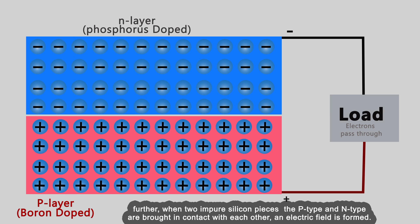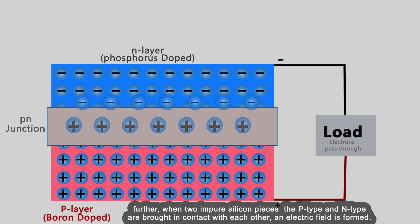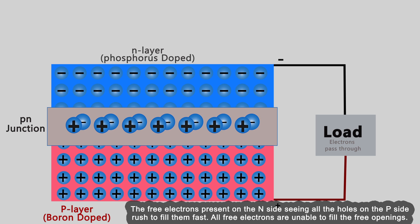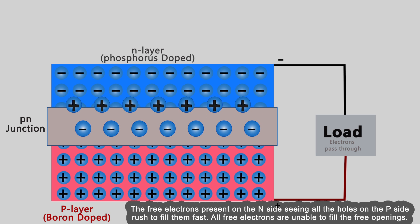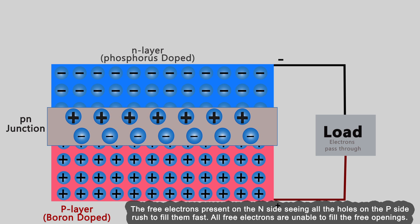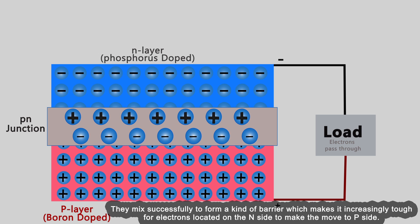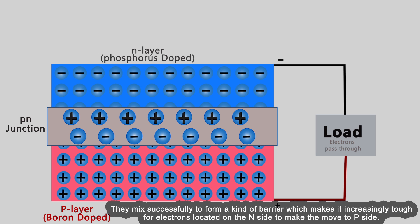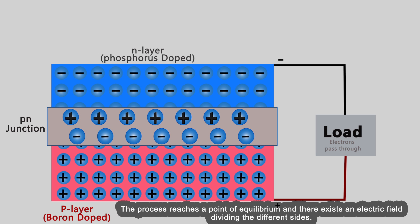Further, when two impure silicon pieces, the p-type and n-type, are brought in contact with each other, an electric field is formed. The free electrons present on the n-side, seeing all the holes on the p-side, rush to fill them fast. All the electrons are unable to fill the free openings. They mix successfully to form a kind of barrier which makes it increasingly tough for electrons located on the n-side to make the move to the p-side.